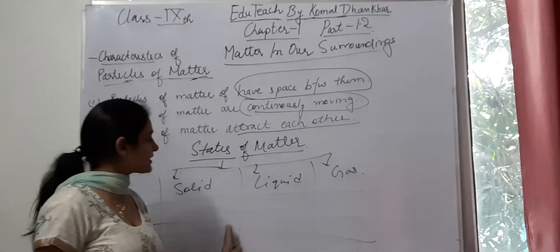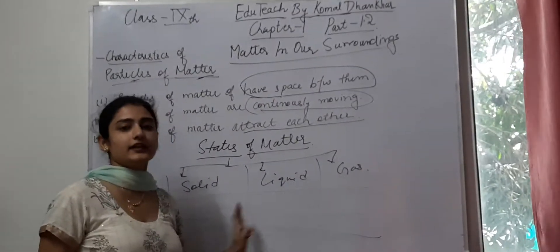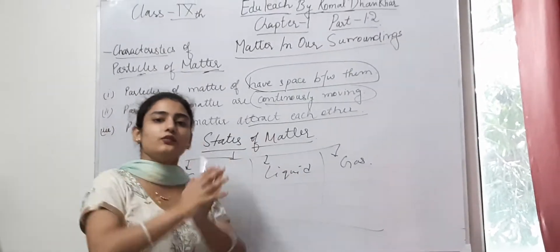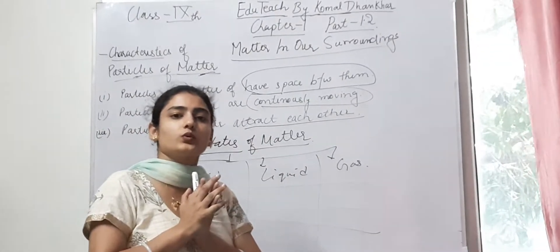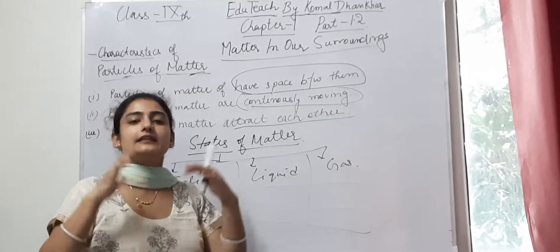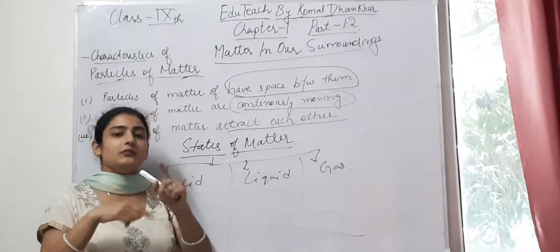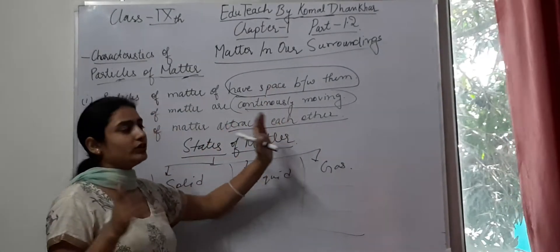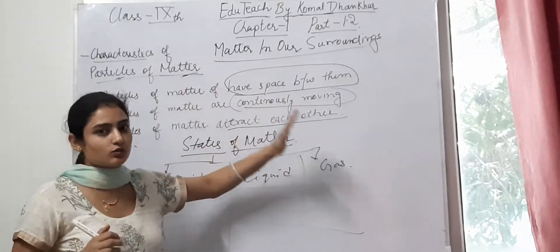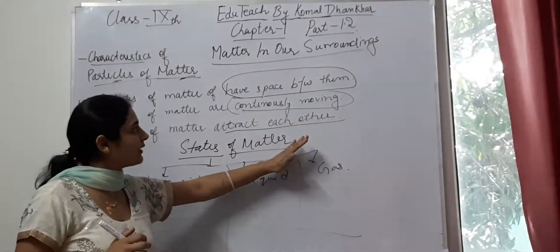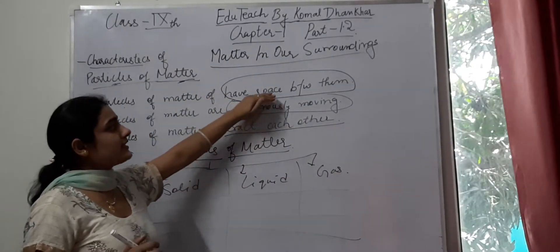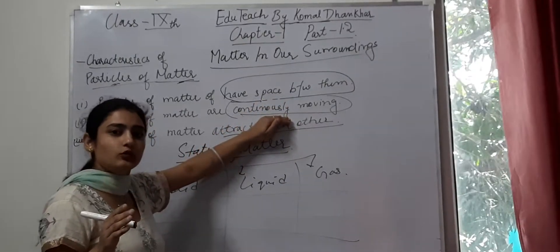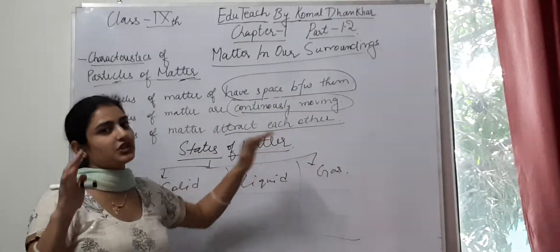Now, for these three states, we will see the three characteristics — how much space is between particles, who is the force of attraction, and how particles move. The next video will show you: particles have space between them, are continuously moving, and attract each other.